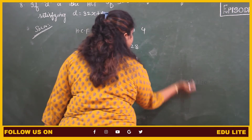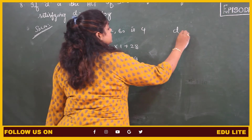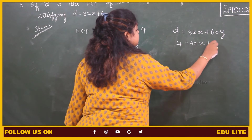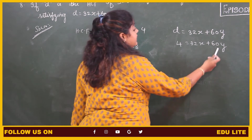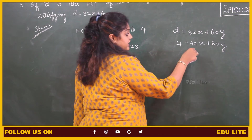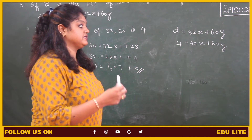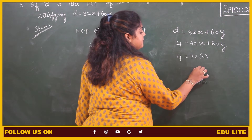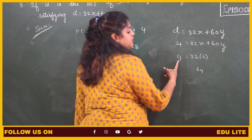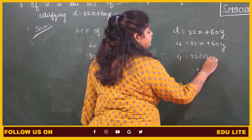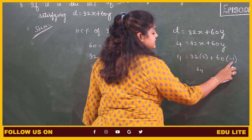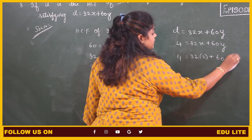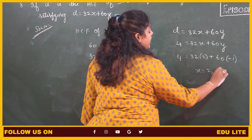Now we have to find the values of x and y satisfying the equation D equals to 32x plus 60y. We know D is 4, which equals 32x plus 60y. We have to choose values of x and y such that the right-hand side equals 4. I am choosing x equals to 2: 32 into 2 gives 64. But the value of D is 4, so I need to subtract. We have 60, so if I choose y equals to minus 1, plus into minus becomes minus: therefore 64 minus 60 gives 4. So x equals to 2 and y equals to minus 1.